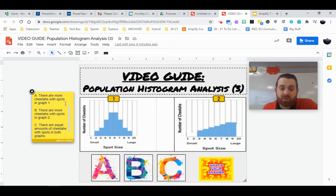There are more cheetahs with spots in graph one. Well, if we look at one compared to two, number one, we'll see that for variations, the first graph has two through nine. So we have two through nine in terms of the sizes of spots. Remember, each one of these bars represents how many cheetahs have those sized spots.